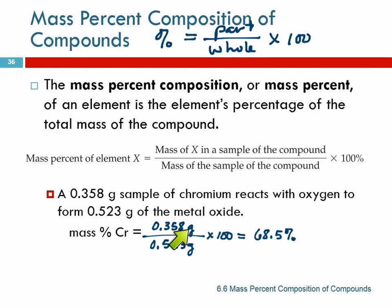You see what happens to the units here? The units cancel out. So we're left with no units, and that's why in your book it uses percent there as a unit. So it's 68.5%.